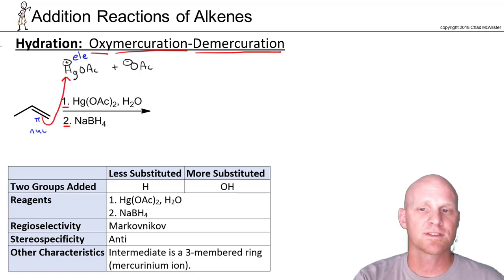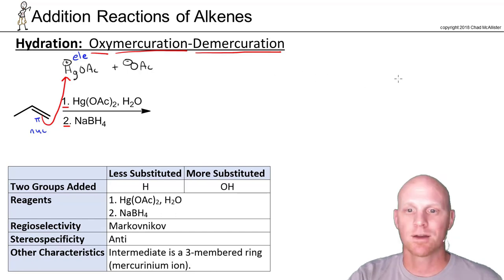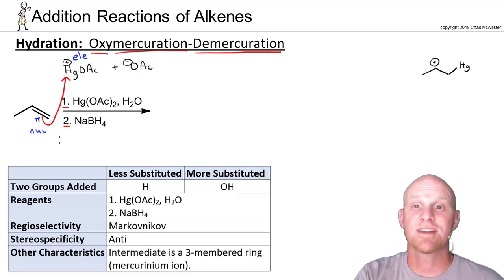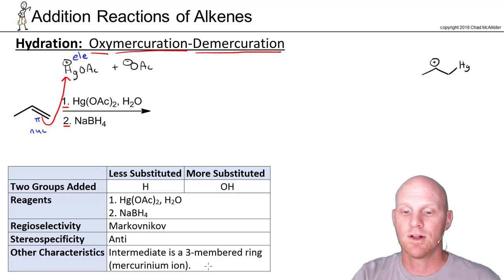If we take a look at what this might look like as it's forming, it'll make a little more sense what we're about to do. Way off to the side here, I'm going to attach that mercury to the less substituted side. That way we get the more substituted carbocation. The problem is that this reaction doesn't actually form a carbocation. If you look down here at the other characteristics in the table, it forms a three-membered ring intermediate we call a mercurinium ion.